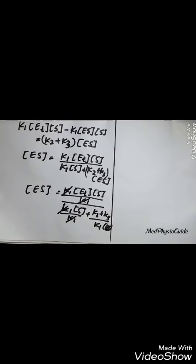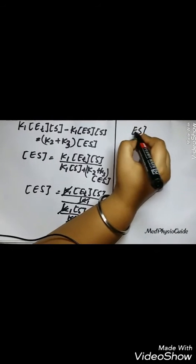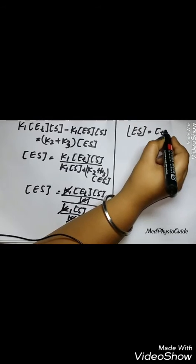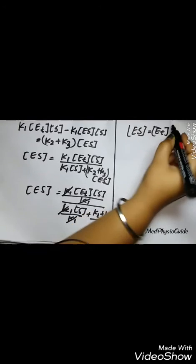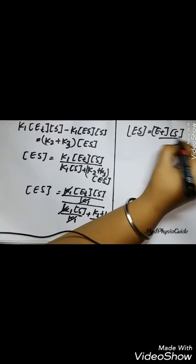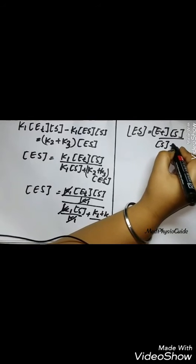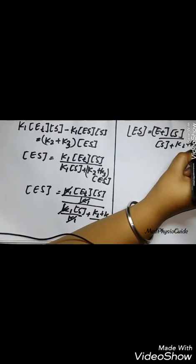Cutting things off, we are left with a simpler version which is ES is equal to ET into S divided by S plus K2 plus K3 divided by K1.